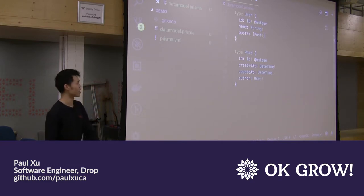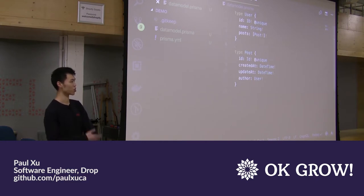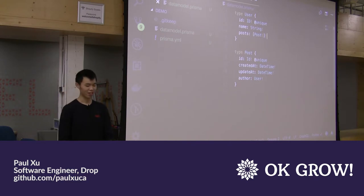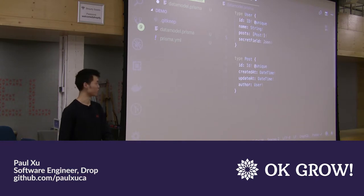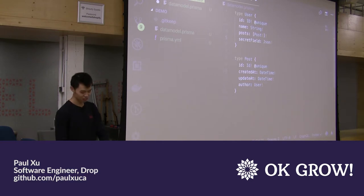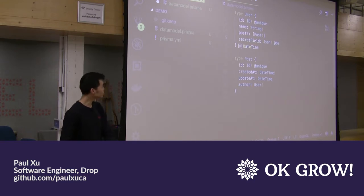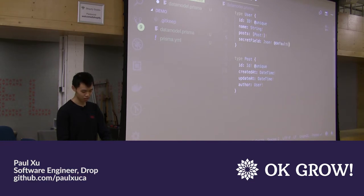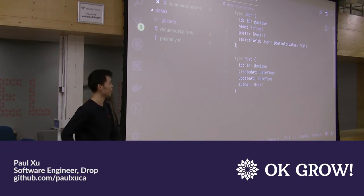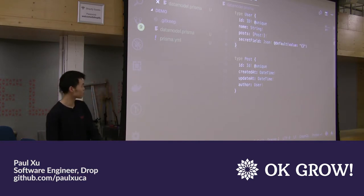One thing to note: if you want a field that's only exposed to your GraphQL API but not to your client, you can add a field like 'secretField' of type JSON — which is unique to Prisma, so you don't need to do anything extra. You can also add default values to fields using the 'default' directive — for example, specifying that 'secretField' of type JSON has a default value of an empty object.